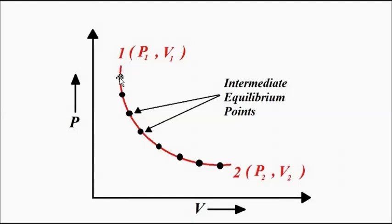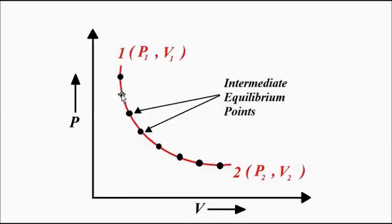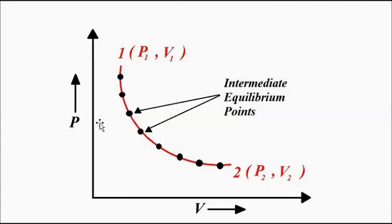When the first piece of weight was taken off, the system reached a new equilibrium; when the second piece was taken off, it reached another; then the third, fourth, fifth, sixth, seventh — and finally when the eighth piece was taken off, it reached the final equilibrium state 2. Each of these middle stages is itself an equilibrium point. The collection or locus of these equilibrium points is called the quasi-static path, and this is a quasi-static process.